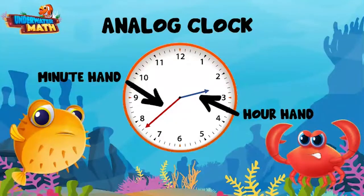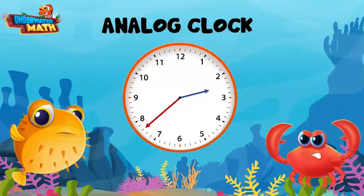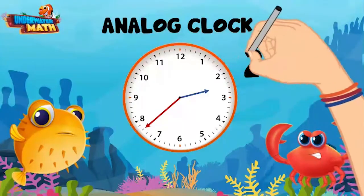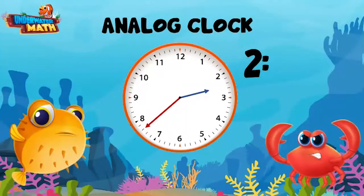This means that sometimes the hour hand isn't pointing directly at a number and might be in between two big numbers. For example, here the hour hand is between two and three. Since the hour hand isn't quite at the three yet, it means the hour is two. The minute hand is pointing between the seven and eight.